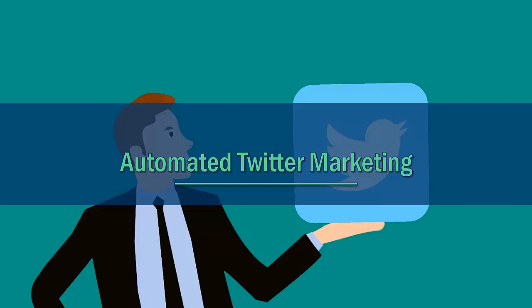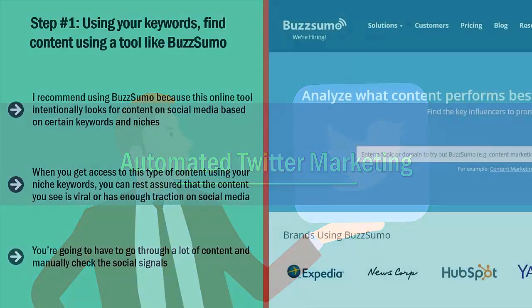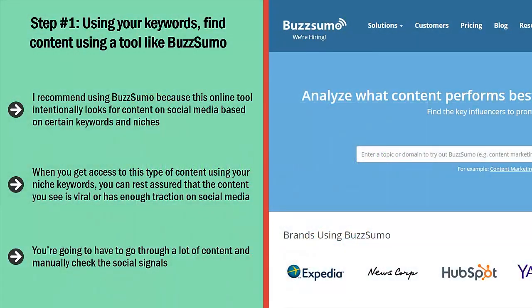Automated Twitter Marketing. Follow the step-by-step directions below to set up your own automated Twitter marketing campaign. Step number one: using your keywords, find content using a tool like BuzzSumo. I recommend using BuzzSumo because this online tool intentionally looks for content on social media based on certain keywords and niches.